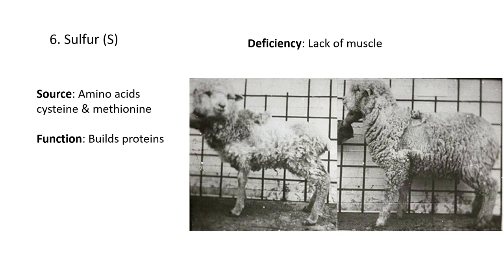As seen in the picture here, the second sheep is not so bad — it does have some muscle but is starting to lose some of its wool. The first sheep on the left has muscle dystrophy — when the muscle has deteriorated, there's almost no muscle left, it looks very skinny, and most of the wool has fallen off. So this is definitely a sick animal. Sulfur is important for building protein and having a healthy animal.